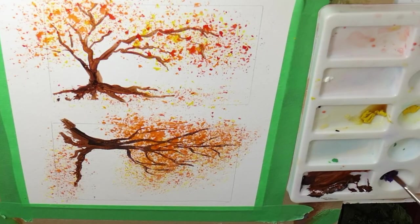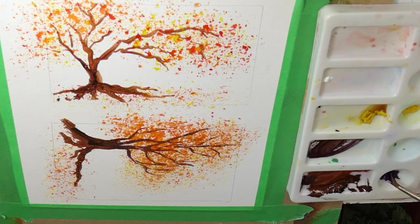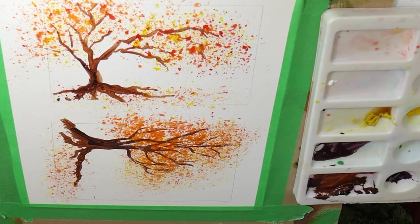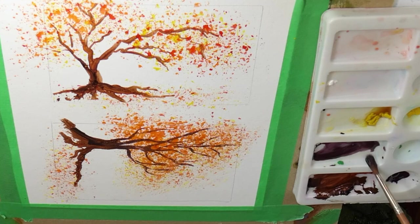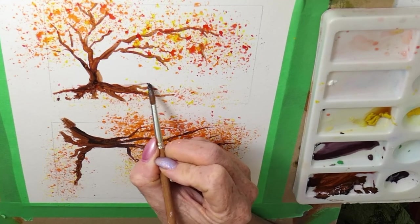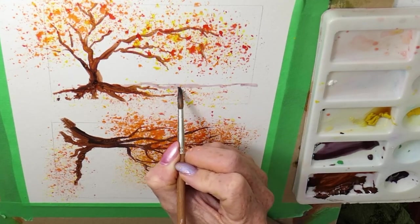So we're just going to let that dry for a minute. I'm just going to get some of this purple and mix it in with my dark brown. And I want a bit more purple. I want more of a purply mix. And plenty of water. I almost lost it.